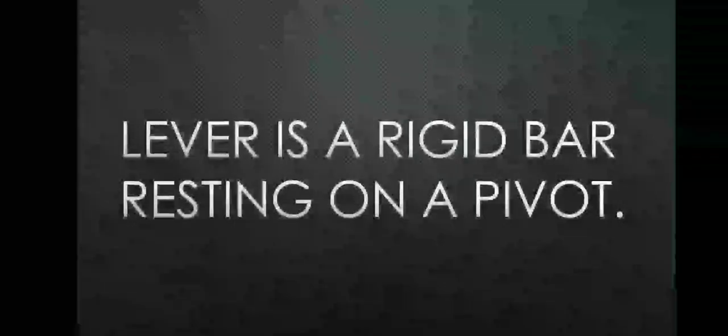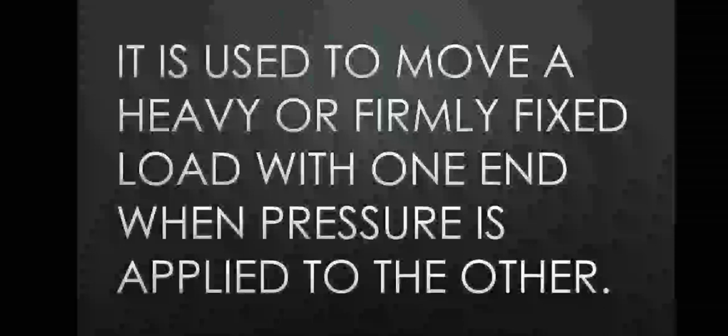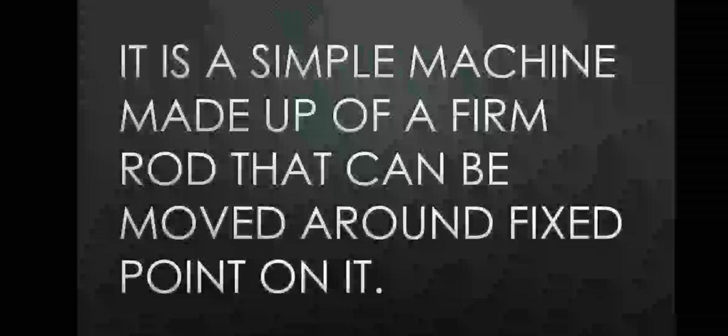Lever is a rigid bar resting on a pivot. Pivot means a fixed point. It is used to move a heavy or firmly fixed load with one end when pressure is applied to the other. It is a simple machine made up of a firm rod that can be moved around a fixed point on it.